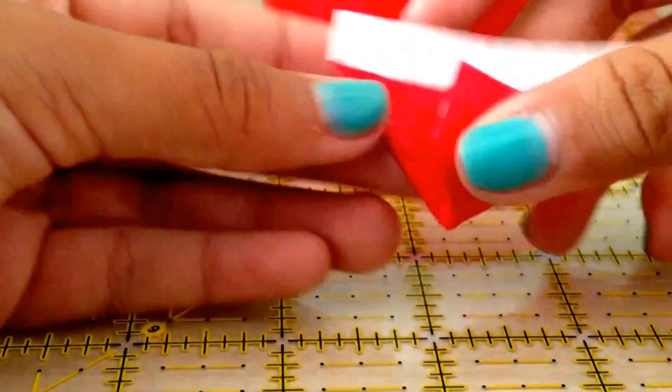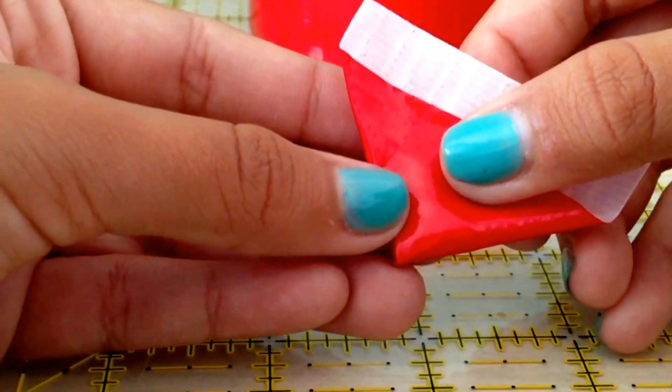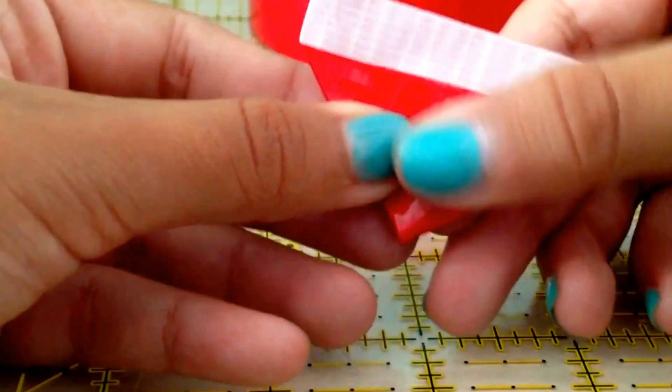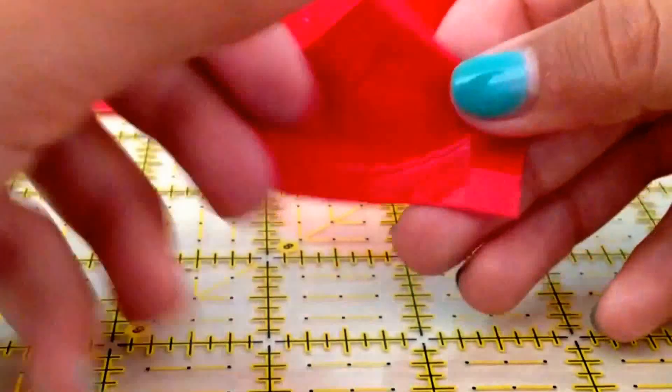Now, take one side and fold it all the way to the other side and then fold it. So, this is how it should look like.